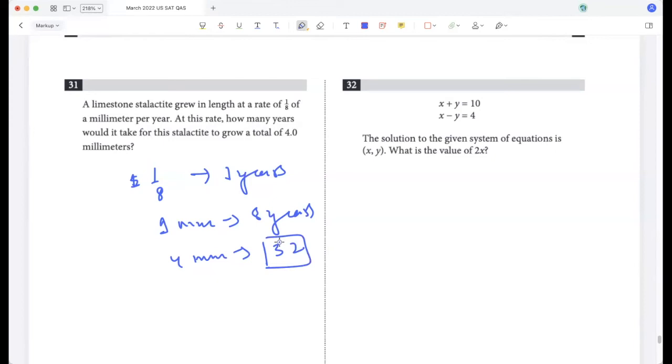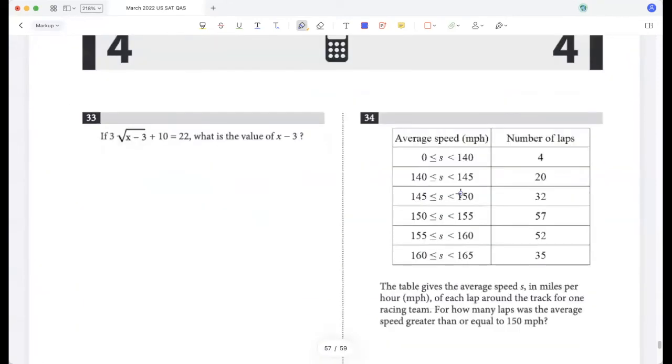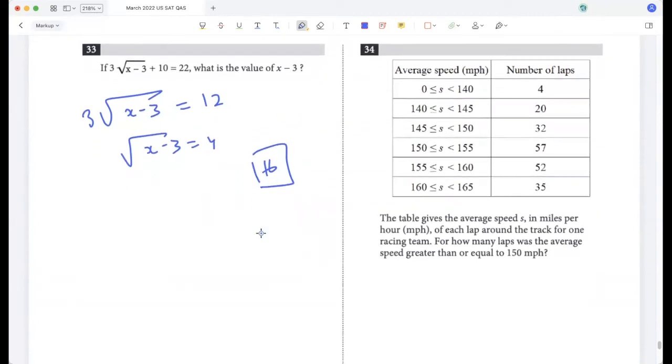The solution to the given system of equations is this. What is 2x? If I add the two equations, 2x will be 14. If this is true, what is the value of x minus 3? 3 root x minus 3 is 12, so root x minus 3 is 4, so x minus 3 would be 16.